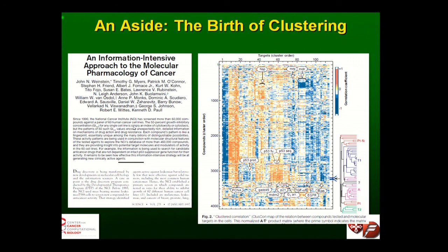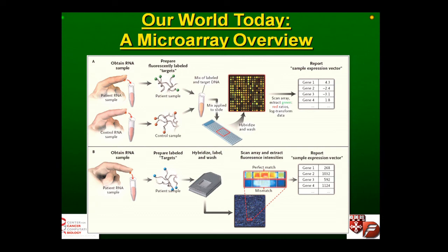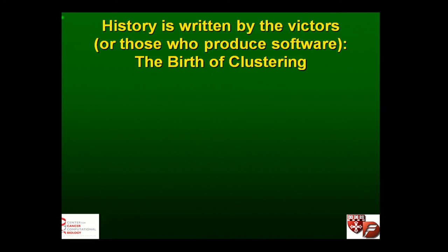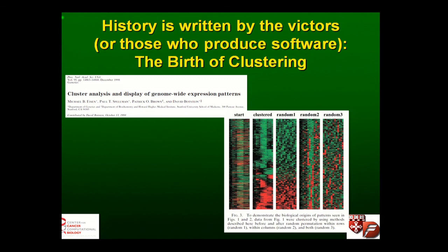Of course, if I asked any of you if you've ever read either of those two papers, the answer is probably no. Because what really happened about this time is microarrays burst onto the scene. History is written by the victors — or as I tell my students, those who write software that other people use. So if you ask where the first application of clustering and heat maps was, it was actually a paper by Mike Eisen, Pat Brown, Paul Spellman, and David Botstein.